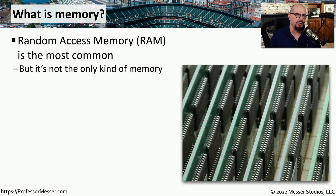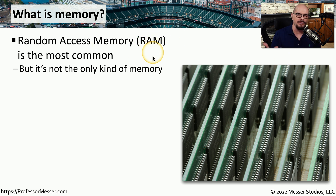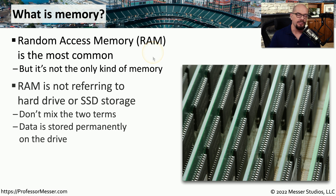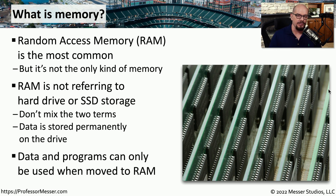If you've ever installed an application or an operating system, you'll notice there's a specification that requires you have a certain amount of memory inside of your system. This memory is referring to random access memory, or RAM — the type of memory commonly used inside personal computers. This is specifically the memory modules or sticks inside your computer, not an SSD or hard drive storage space. It is the high-speed temporary storage area used when you load an application or document; you can only use them when all that information is loaded into memory.